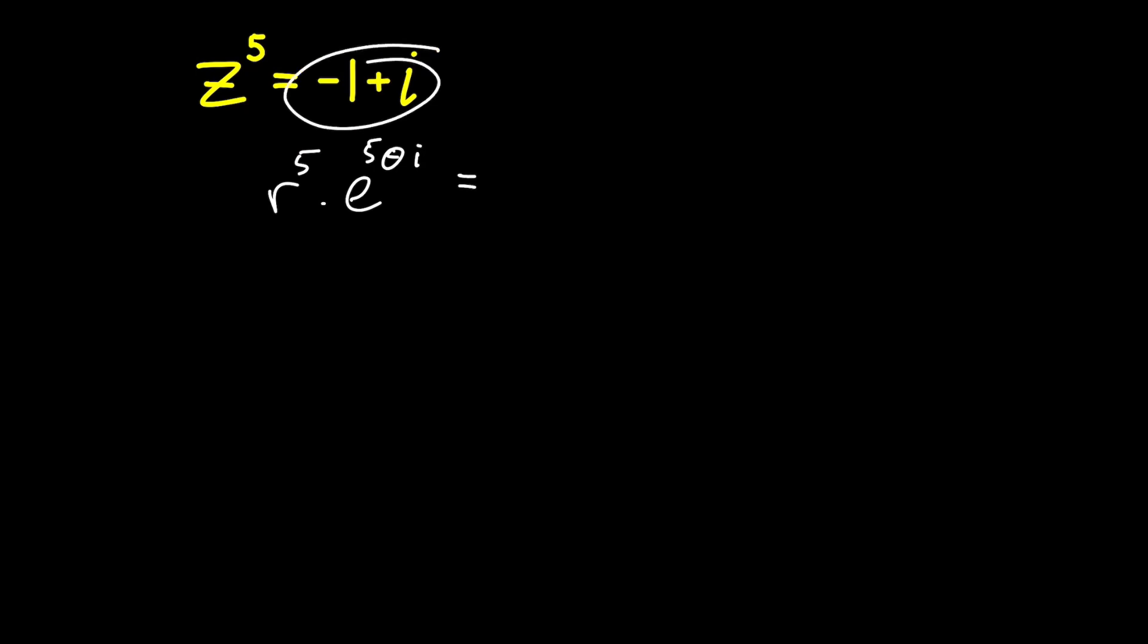Now for the right-hand side, we have to express this in exponential form, exponential modulus argument form. So let's draw our complex plane with our real numbers on this axis and our imaginary numbers on this axis. Our negative one will put us somewhere here on this line, and then plus i will put us on this line. So that's where our complex number sits.